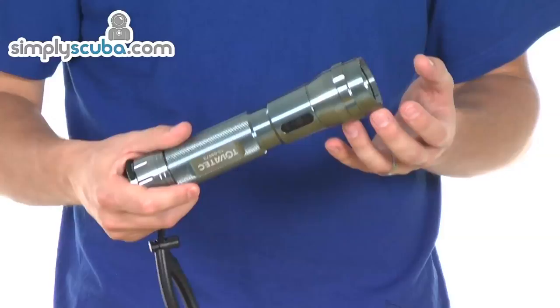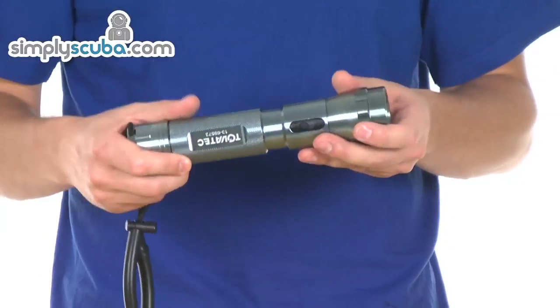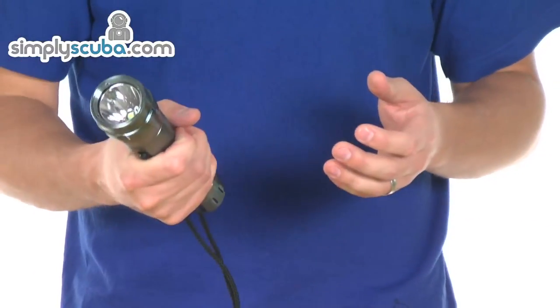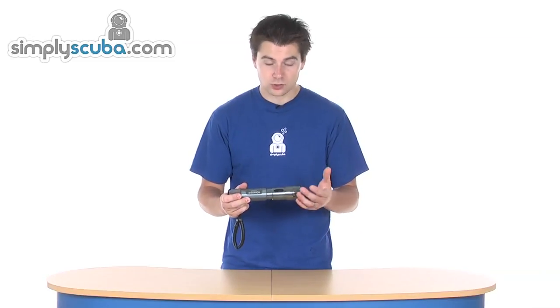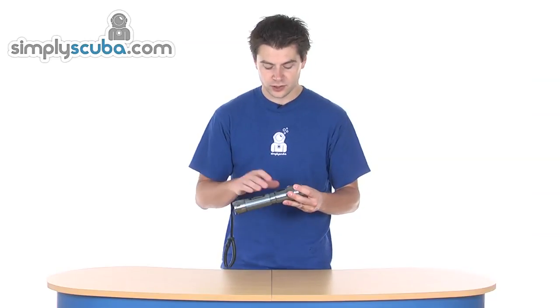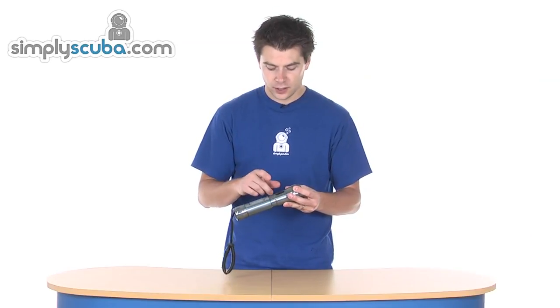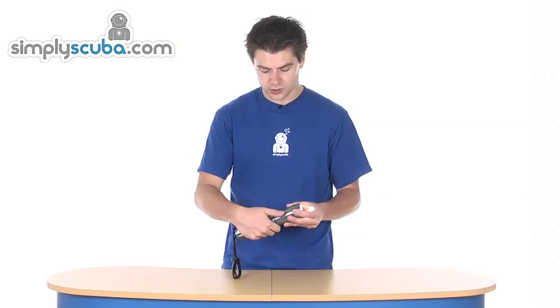The whole torch is made from anodized aluminum, so it's nice and tough, very strong. You've got a magnetic switch operation, which is great. You don't have penetration through the housing, so there's no problem with failure—just a nice simple push slider.